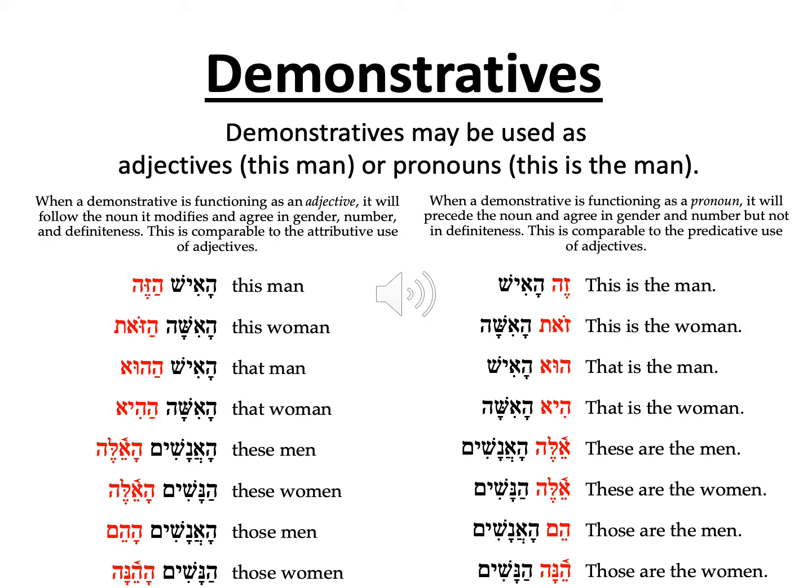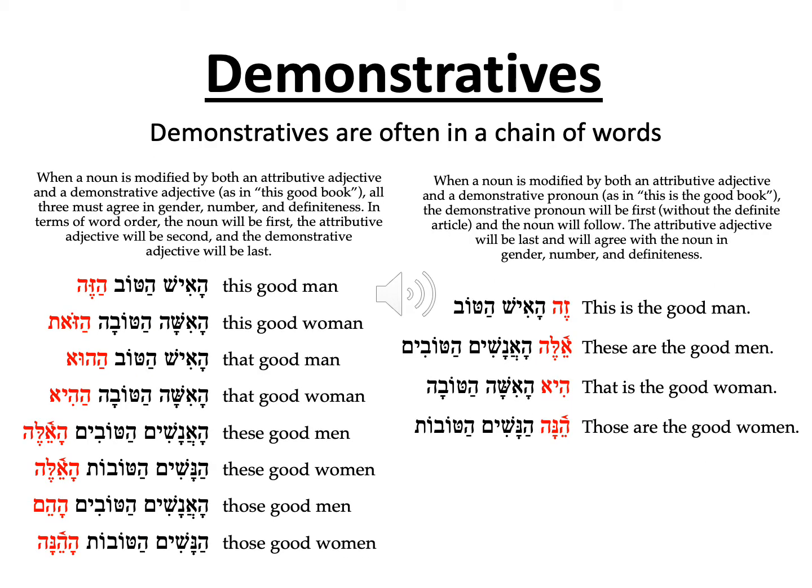Remember, adjectives are used attributively and will agree in gender — whether masculine or feminine — number, whether singular or plural, and definiteness, a or the. Adjectival demonstratives will also typically follow or come after the word they are modifying. Demonstrative pronouns, on the other hand, typically come before the word they are paired with and are used predicatively, agreeing in gender and number but not in definiteness. In other words, adjectival demonstratives act like adjectives, demonstrative pronouns act like nouns. Even in chains of connected words, word order and definiteness is the key to identification.